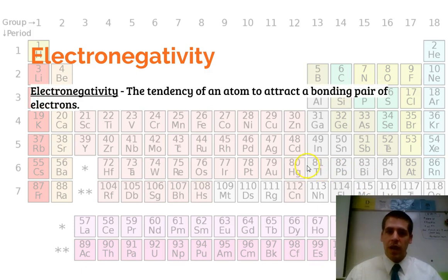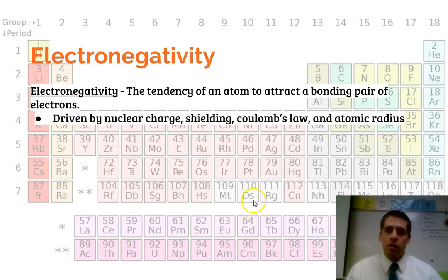All of this is driven largely by electronegativity. The electronegativity is the tendency of an atom to attract a bonding pair of electrons. So if you think about that example I just showed, it's really the force from the nucleus to the other atom's electron, because we're talking about a bonding pair, not just its own electron. It's driven by all of the periodic trends that we've talked about: nuclear charge, shielding, Coulomb's law, and the atomic radius.